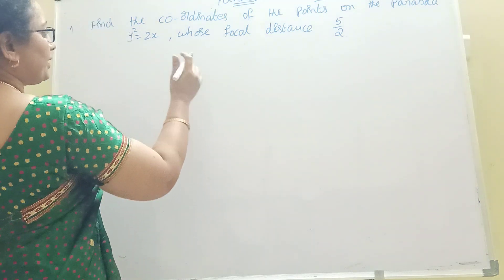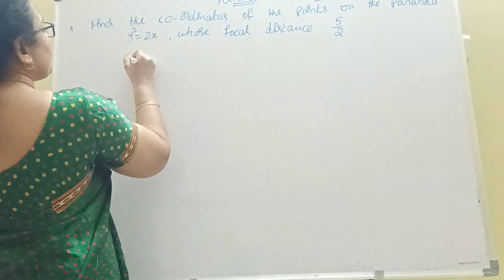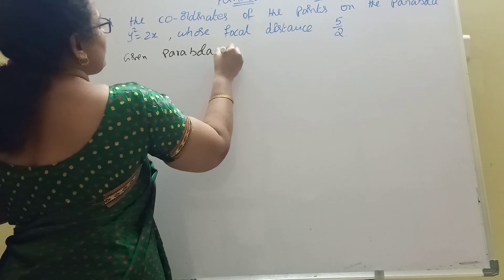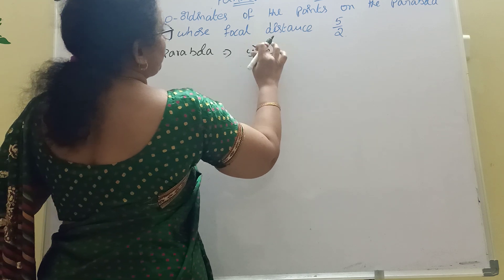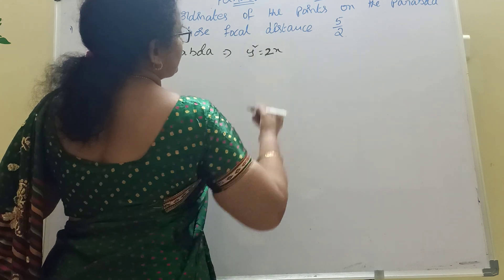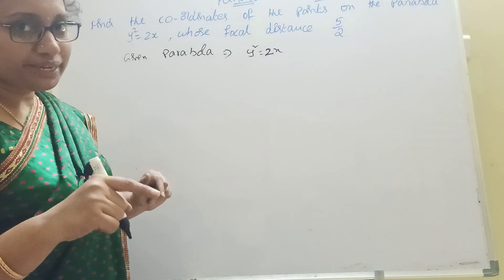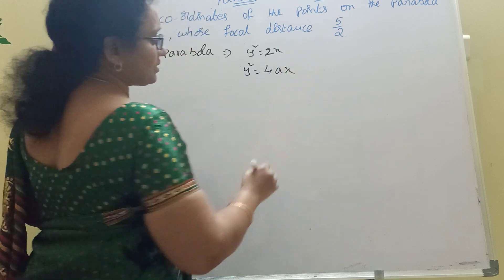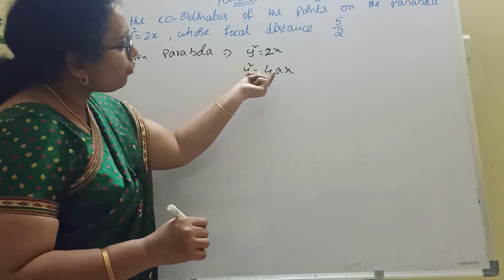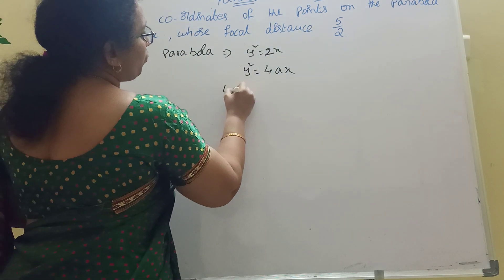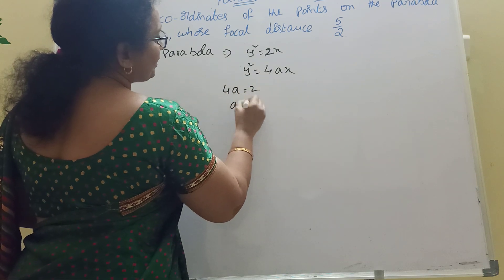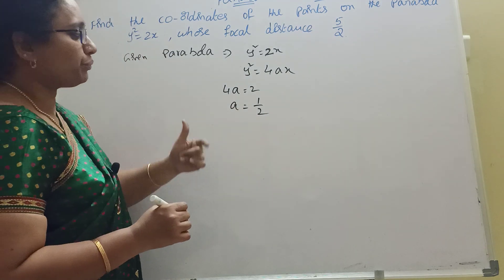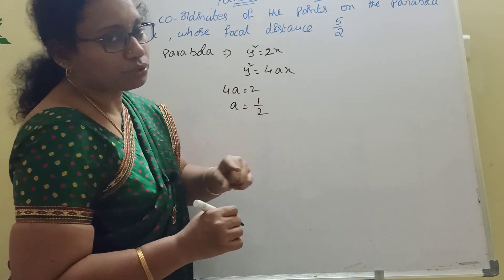Using the formula for the given parabola: y² = 2x. Comparing with the standard form y² = 4ax, we get 4a = 2, therefore a = 1/2. So from y² = 2x compared to y² = 4ax, we find a = 1/2.